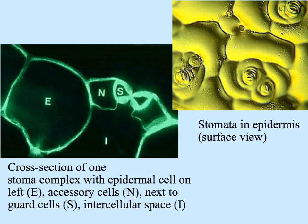Here are some photos of what stomata look like. The one on the left is a longitudinal section right through the stomata — the little 's' is in one of the guard cells. 'E' is for epidermal cell, 'N' marks the accessory cells, and 'I' is the intracellular space into which gases diffuse or water vapor can exit. The picture on the right is a surface view showing the large epidermal cells with little stomata scattered across them.